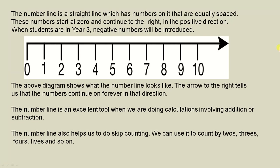The above diagram shows what the number line looks like. The arrow to the right tells us that the numbers continue on forever in that direction.